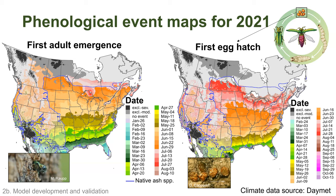Here's the same map now showing predictions of first egg hatch. Egg hatch generally occurs a few weeks later than adult emergence — as late as October in the coldest areas, but generally in late June through the Midwest and up through July further north. Over in Oregon, egg hatch is predicted to occur sometime in mid to late July. These maps could be important for detecting adults early in areas where EAB hasn't established yet, or for conducting management and biocontrol release using predictions of egg hatch.